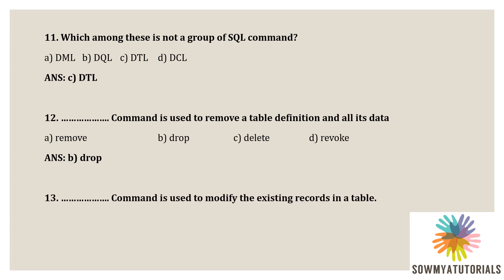Next question: which command is used to modify existing records in a table? Options are: option A, modify; option B, update; option C, select; option D, join. The correct option is option B, update. The update command is used to modify existing records in a table.